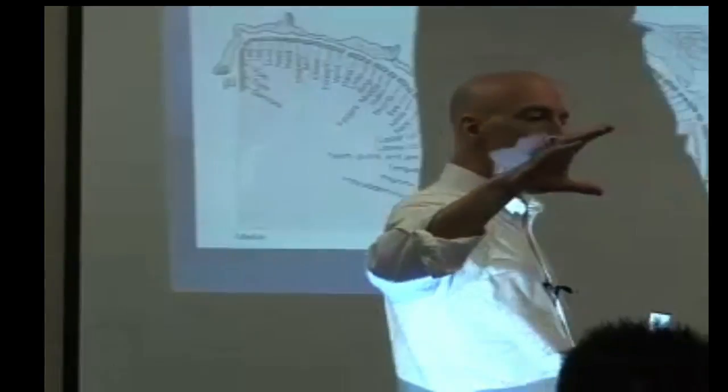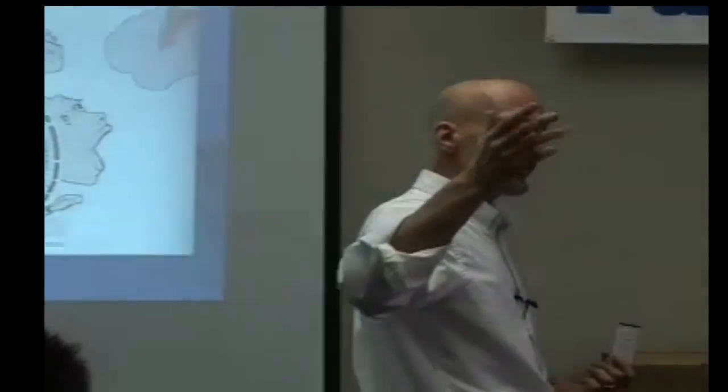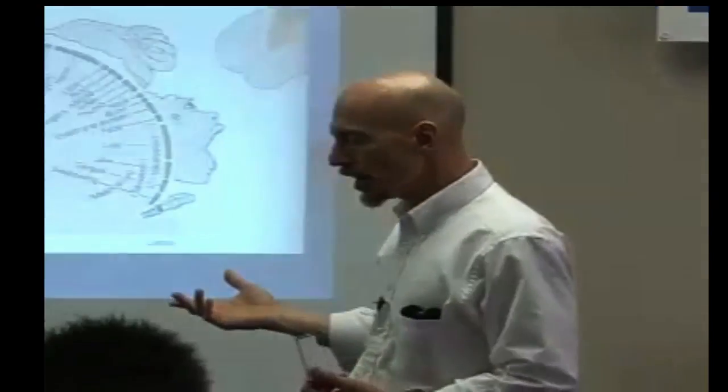Anything that you can do voluntarily is pretty much driven by your corticospinal system. We get a small contribution from the rubrospinal system, the red nucleus and that whole thing, but pretty much it's all corticospinal. That's what runs the show.